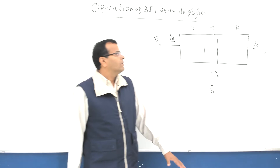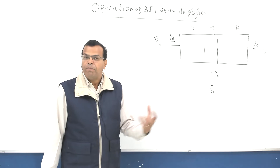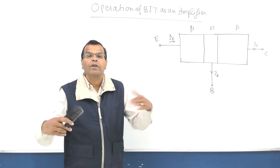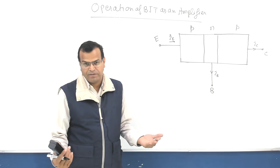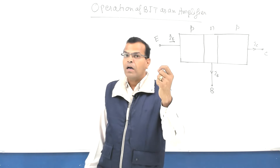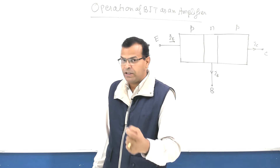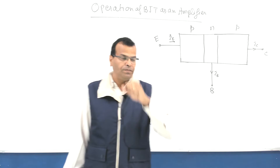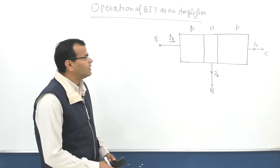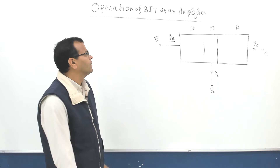When you talk about amplifier — amplification of what? Amplification of current. BJT is basically a current controlled device. So let us see how it is going to be.